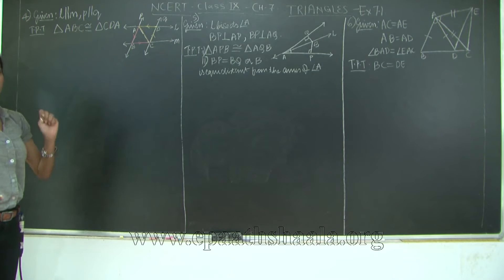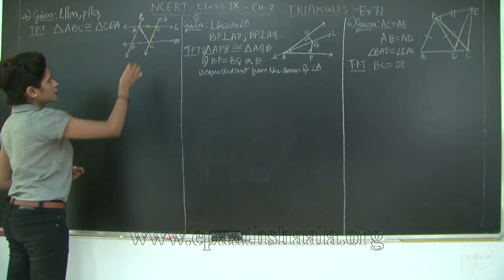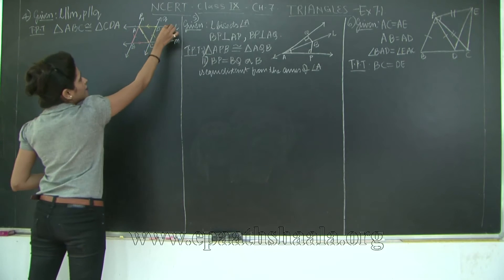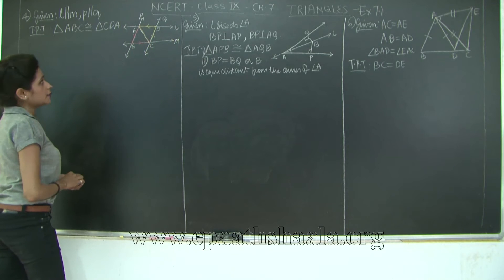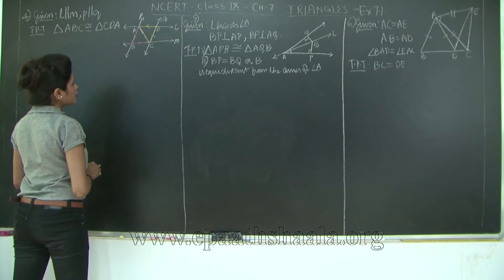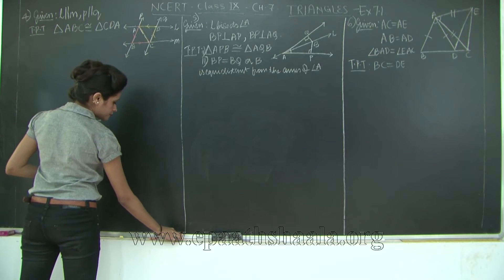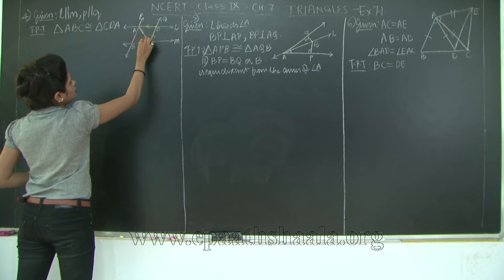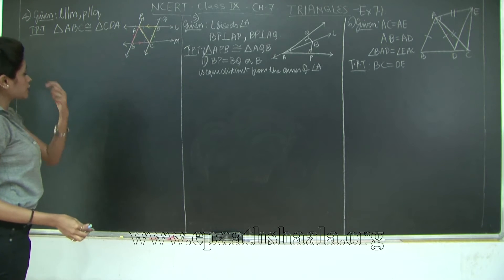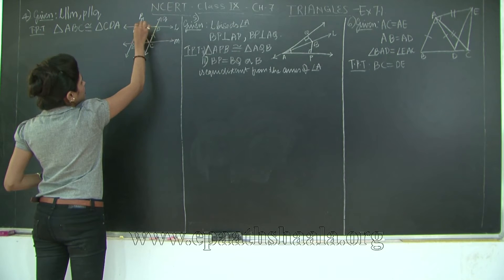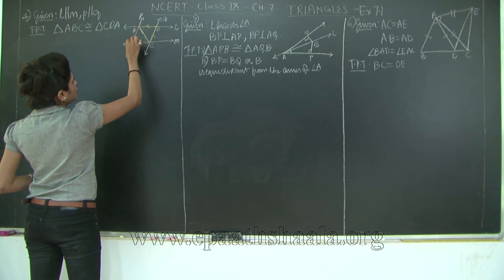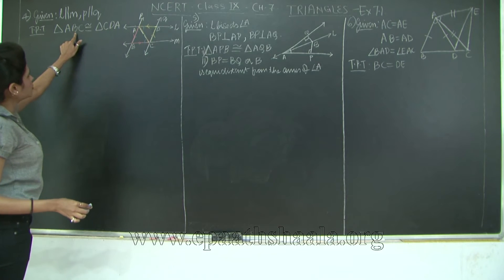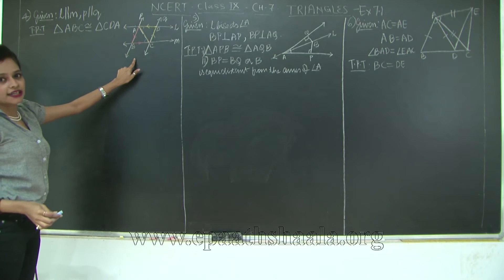Now how are we going to prove the two triangles congruent? In triangles ABC and CDA, I have line L parallel to line M. Therefore these two angles are going to be congruent. I have angle DAC congruent to angle BCA because they are a pair of alternate angles.